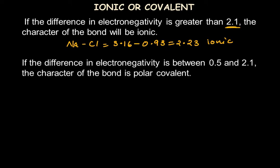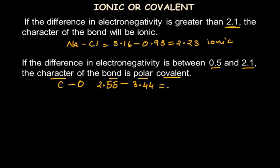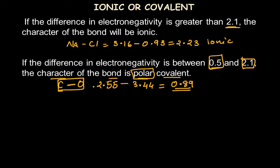If the electronegativity difference between two covalently bonded atoms is between 0.5 and 2.1, the bond is a polar covalent bond. For example, carbon has a value of 2.55 and oxygen 3.44 on the Pauling scale. The difference is 0.89, which falls between 0.5 and 2.1, so the carbon-oxygen bond is a polar covalent bond.